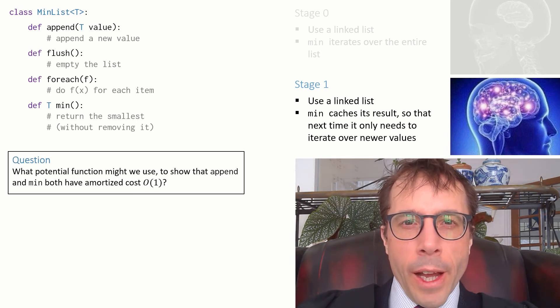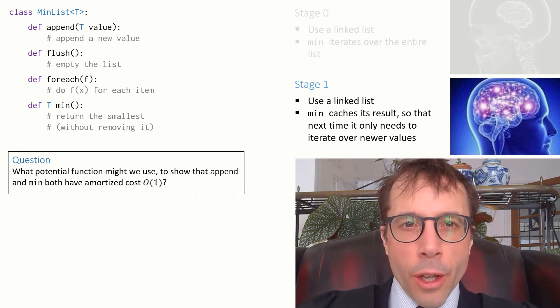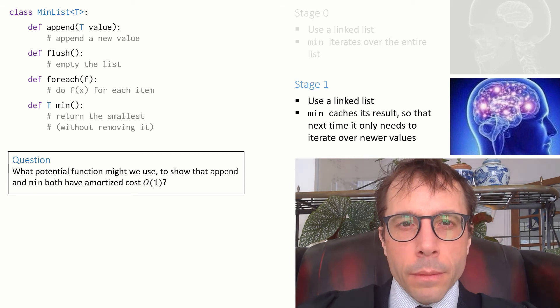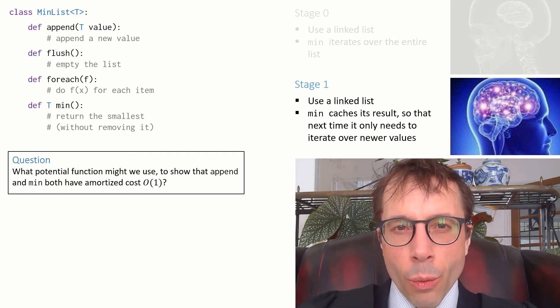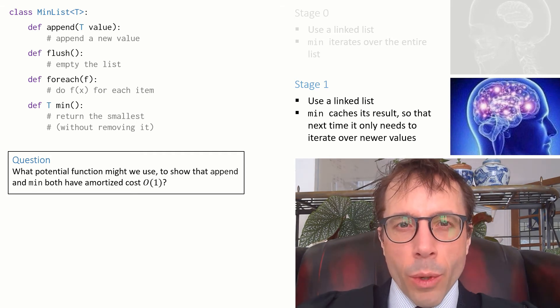Now, a question. How could we use the potential method to prove that append and min both have amortized cost O of 1? Pause the video, work out your answer, press play when you're ready.